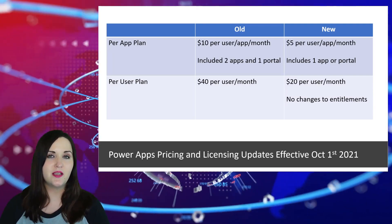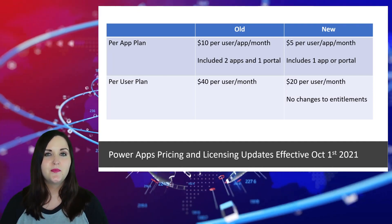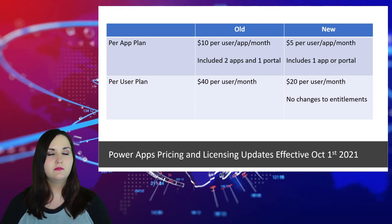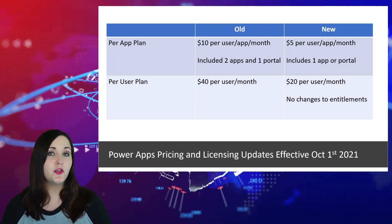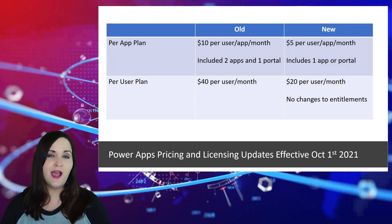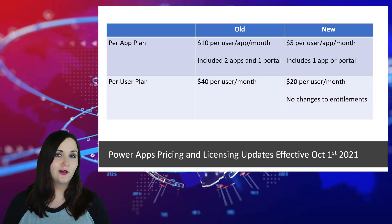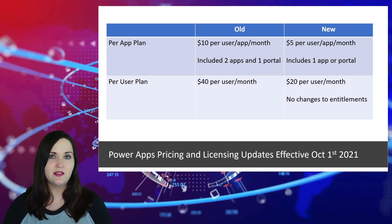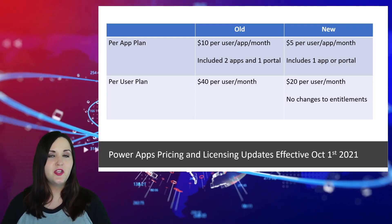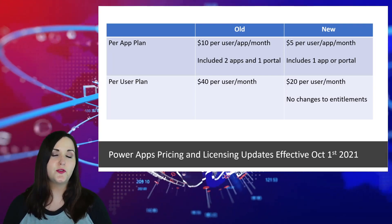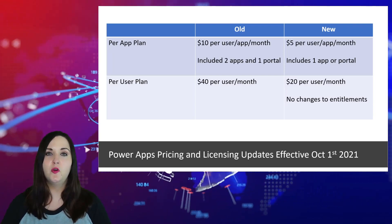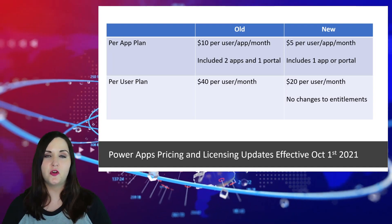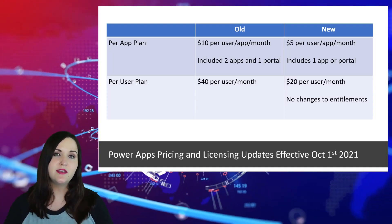So now you pay $20 per user per month and that licensed user can use as many Power Apps as they want. The other change involves the per app license. The per app license name was always a little strange because you didn't simply get one application — you actually got two Power Apps and a portal for $10 per user per month. Effective October 1st, the per app license will be $5 per user per app per month for a single application — whether it's a canvas app with premium features or a model-driven app.